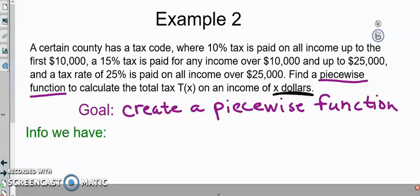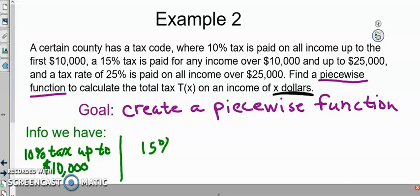Here's the info that we have. We know first off we pay 10% tax for up to $10,000. The next one says we pay 15% tax for income over $10,000, so $10,001, and up to $25,000.